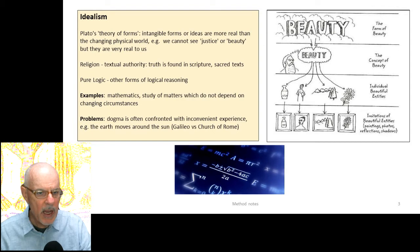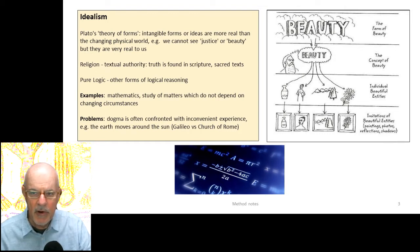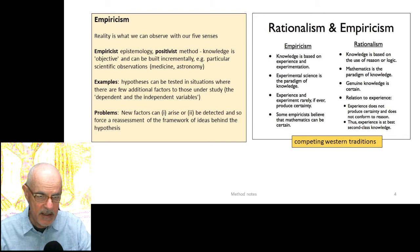The problem is that dogma in this territory is often confronted with inconvenient experience — for example, the famous clash between Galileo and the Church of Rome about the earth moving around the sun rather than vice versa. In the so-called Enlightenment period in Europe, we have the rise of empiricism — a rejection of those old dogmas and an attempt to define reality by what we observe with the five senses: hearing, seeing, tasting, smelling, and so on.